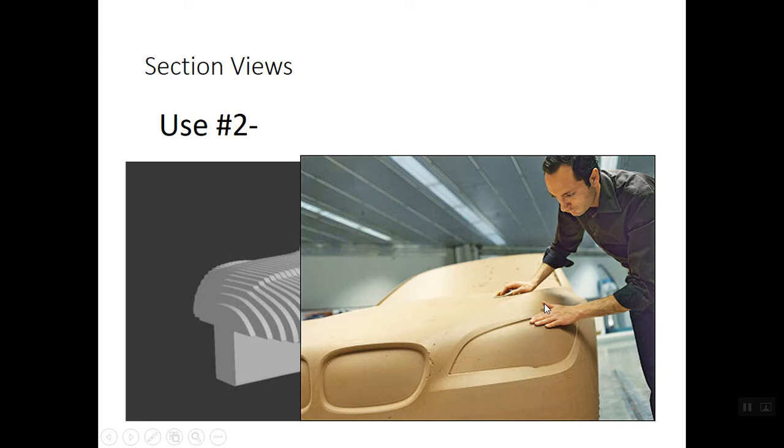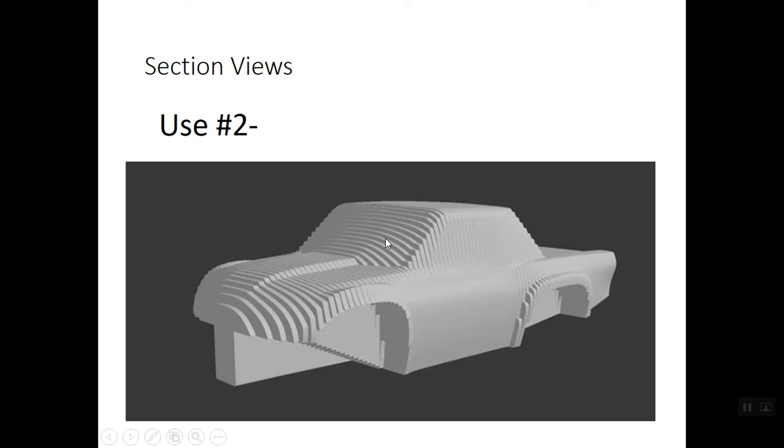We mock it up using sheets of polystyrene, sections of polystyrene, two inches thick. And then at the end, we cover it over with some clay to give it that smooth finished appearance. And this is how automotive design was done for a very long time.